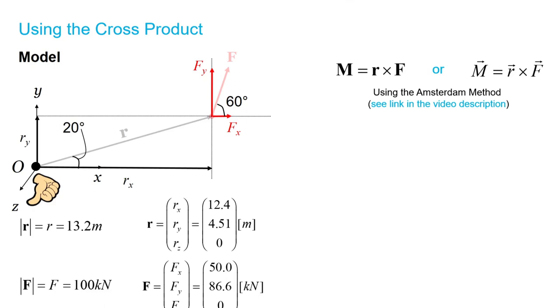So, in the Amsterdam method, what we do is we take our position vector and our force vector, because it's R cross F, so we have R and we have F, and we stack it on top of a copy of itself. So we have position vector R here as well as a copy of position vector R, force vector F, and a copy of force vector F.